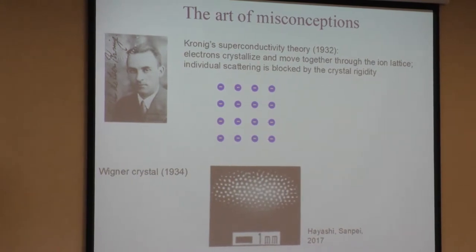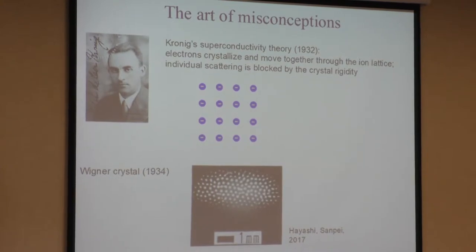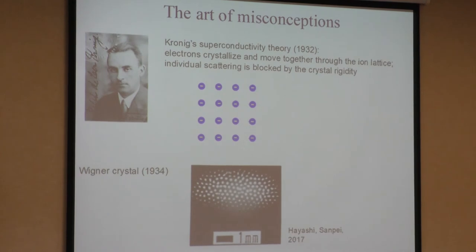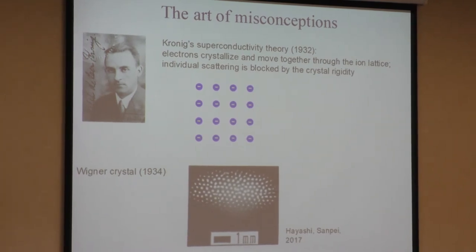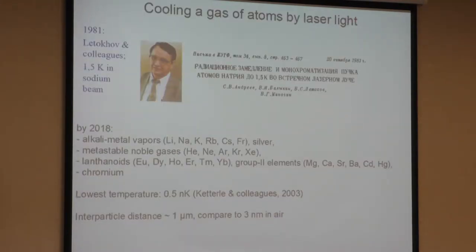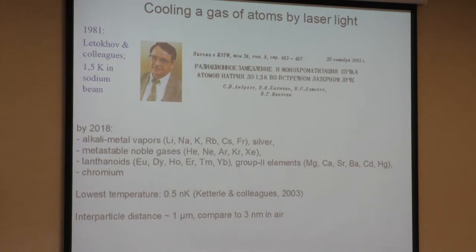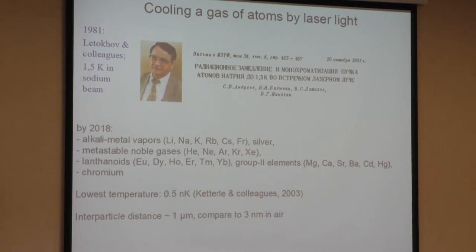Kronig initially was going to publish with Bohr, but Bohr later withdrew his name, and Kronig persisted and published alone. Now let's go to ultra-low temperatures. How to produce low temperatures? Currently, the lowest temperatures are produced by means of lasers — a laser does not only heat up, it can remove energy. The story of cooling atomic gases began back in 1981 in the city of Troitsk, near Moscow. The group of Vladilen Litohov did the first experiment on cooling a beam of sodium atoms, just in one dimension.